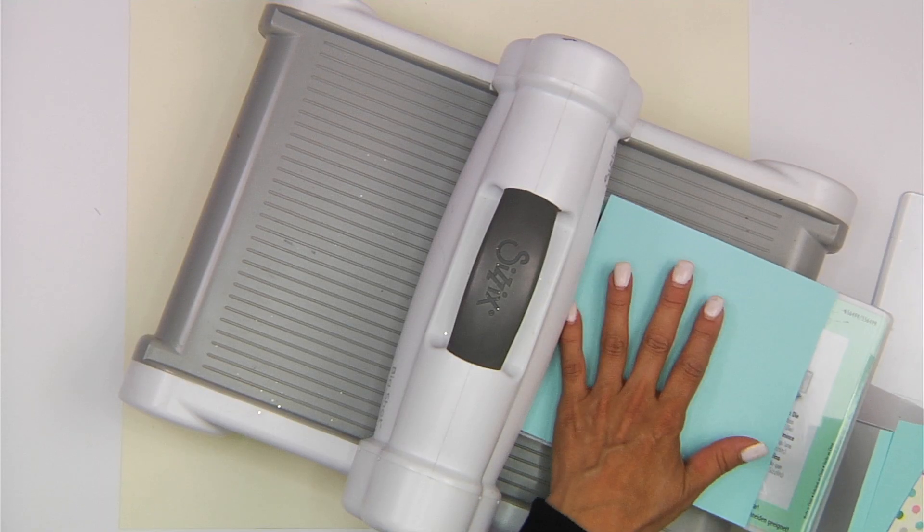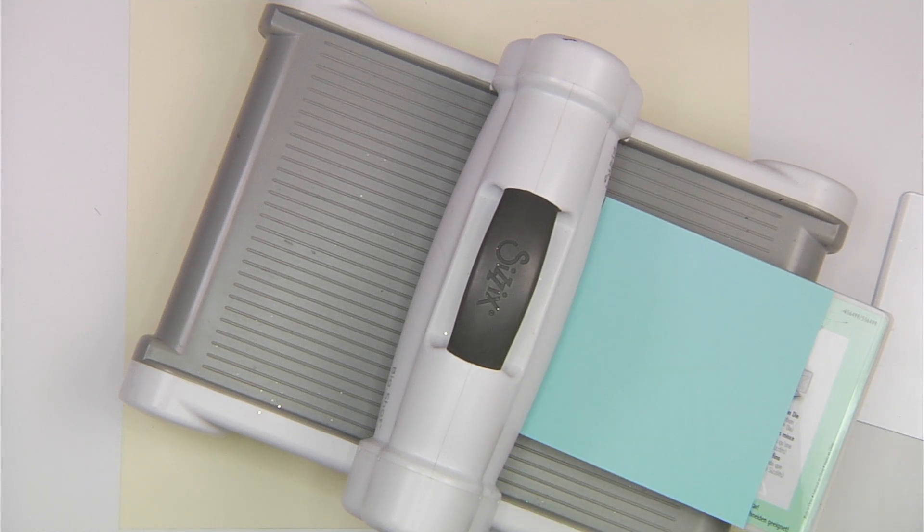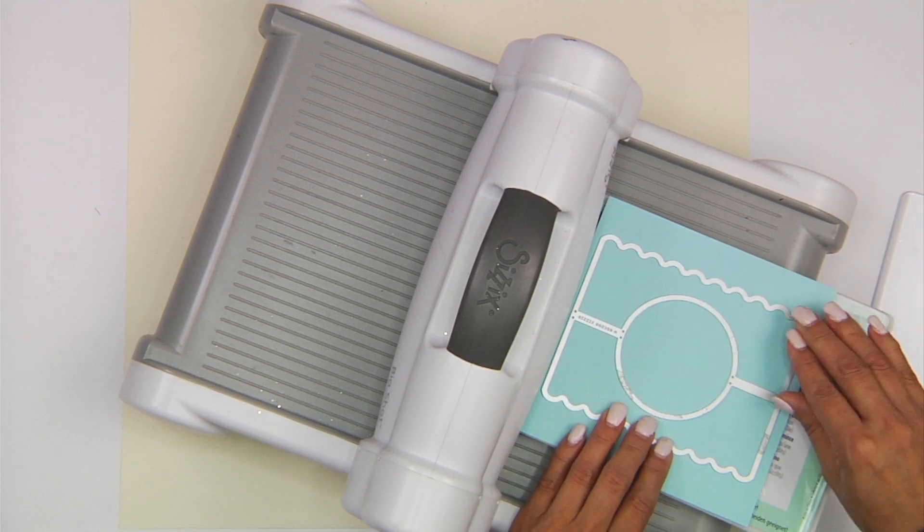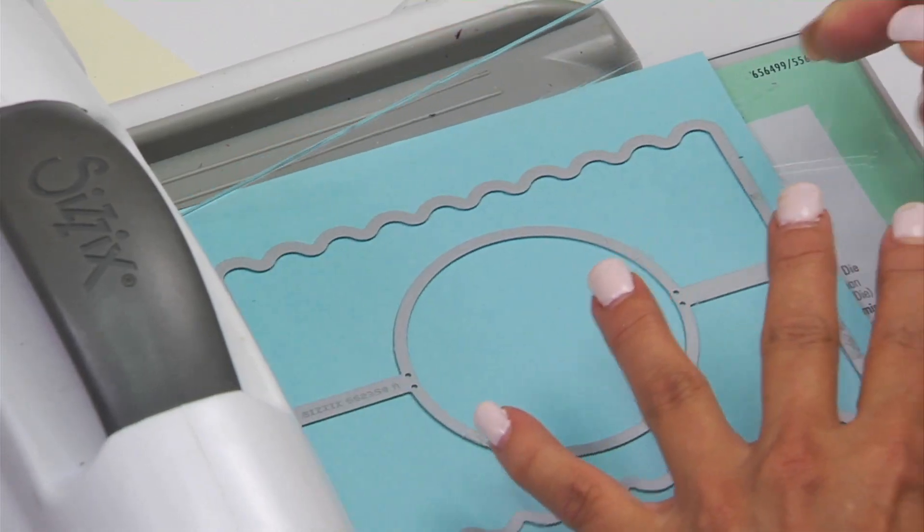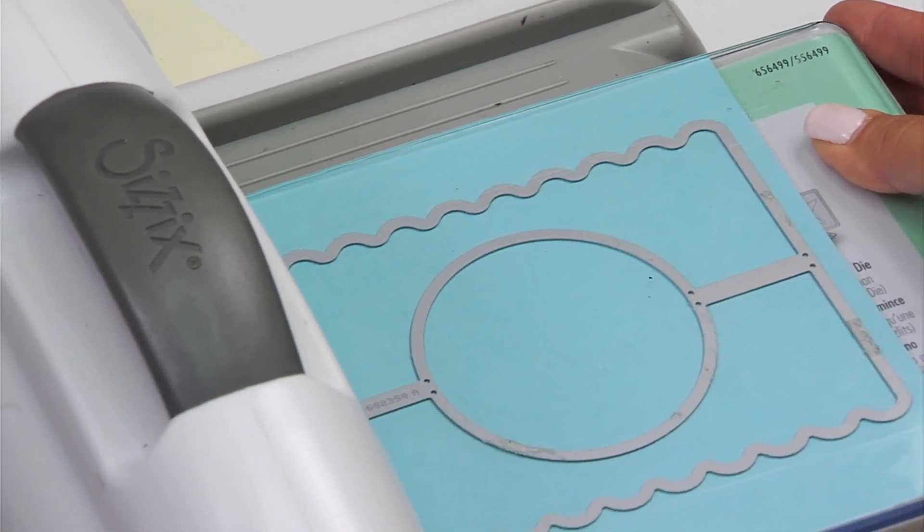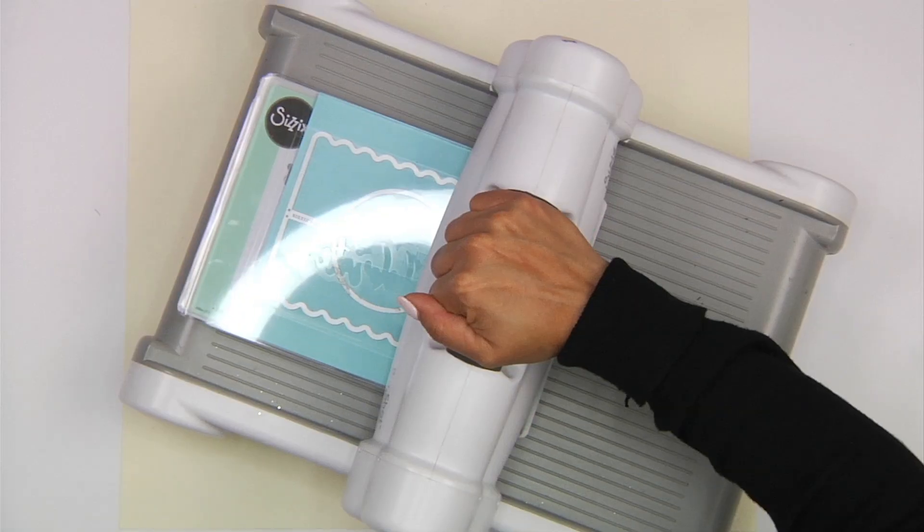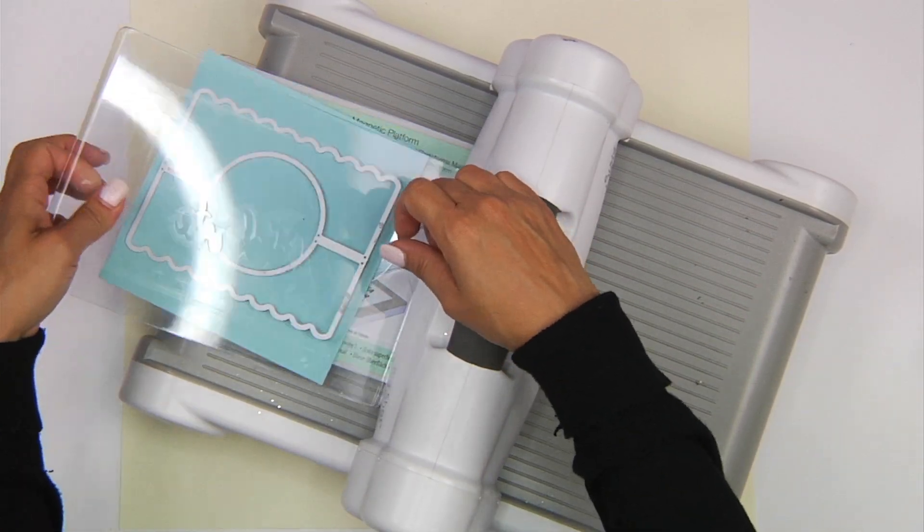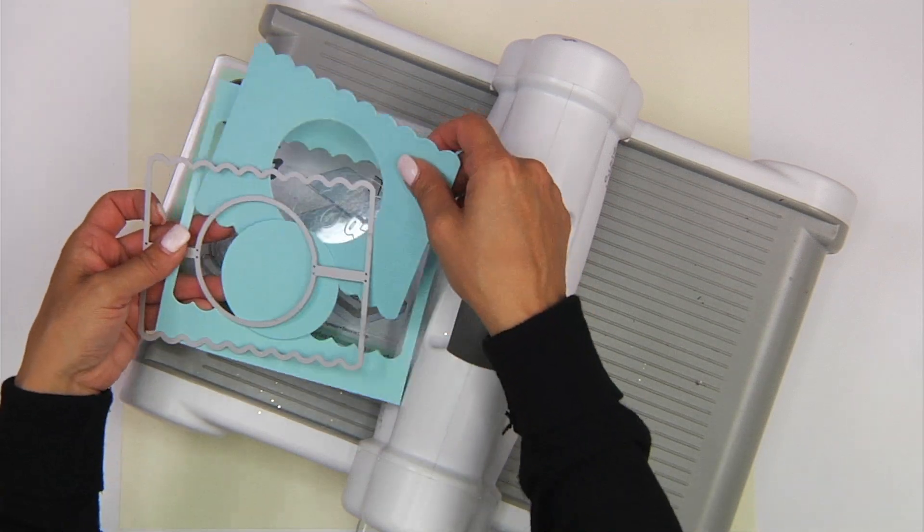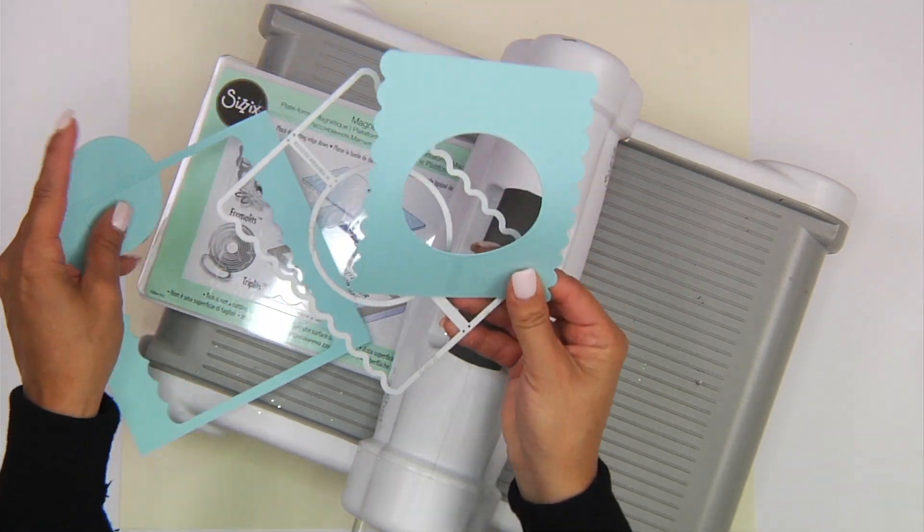We'll go ahead and place one right on top of our cutting pad, and here is the die that we'll place right on top. We'll use our last cutting pad and run it through our machine. You're going to want to cut this base four times out of the solid cardstock.